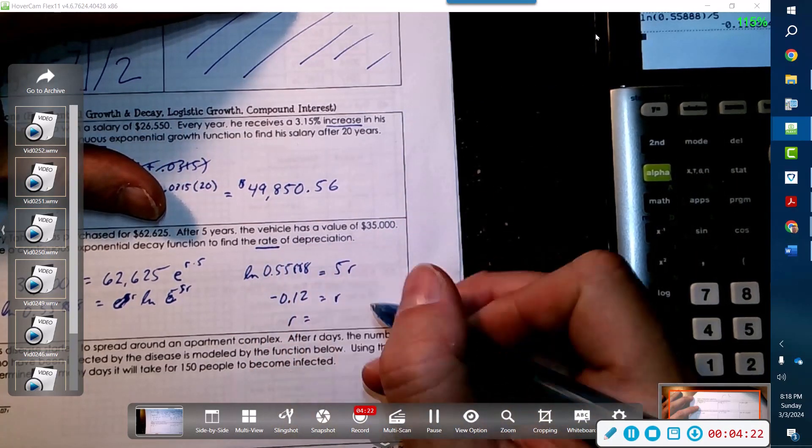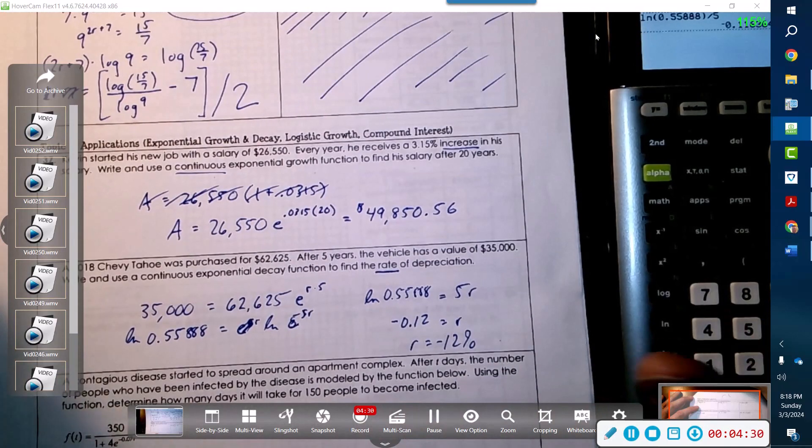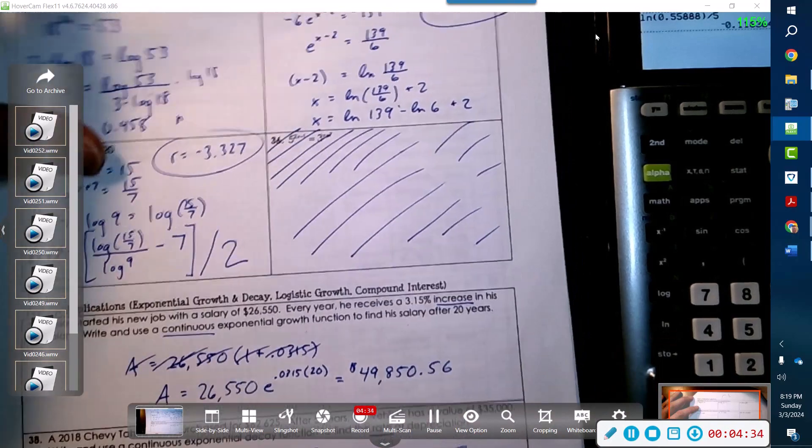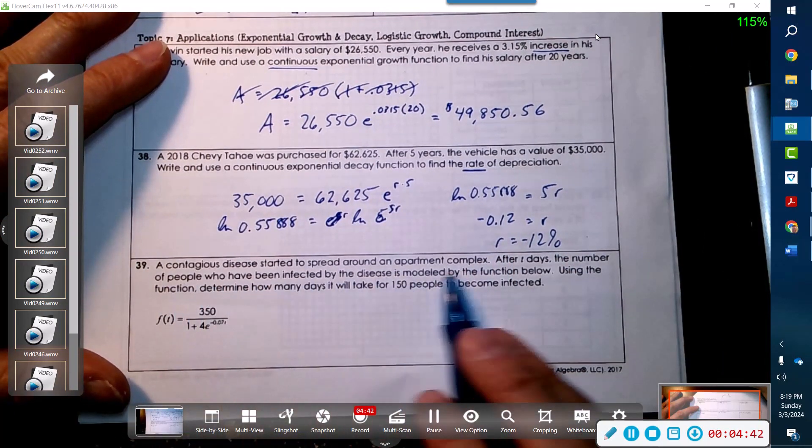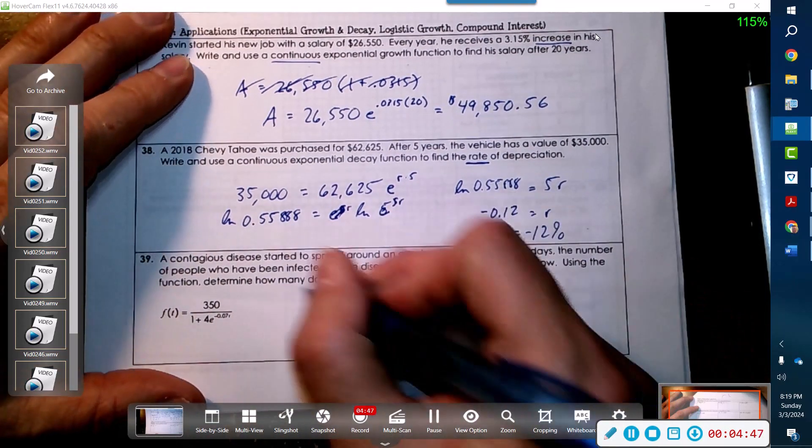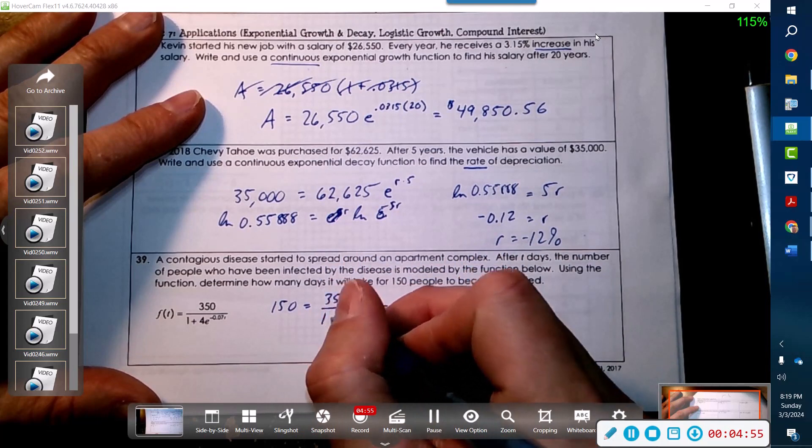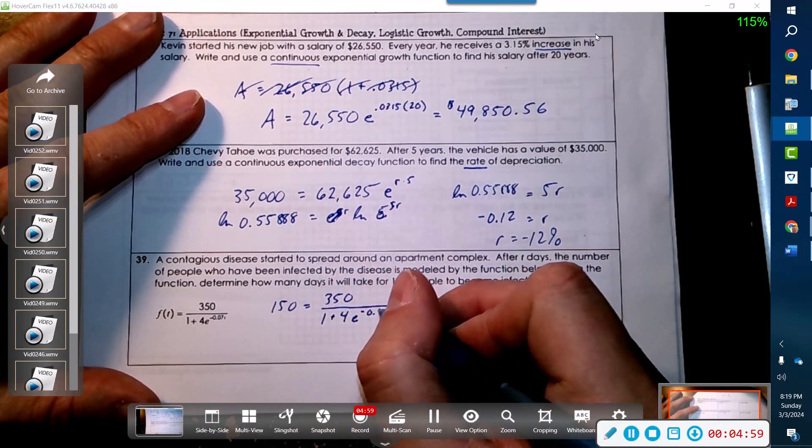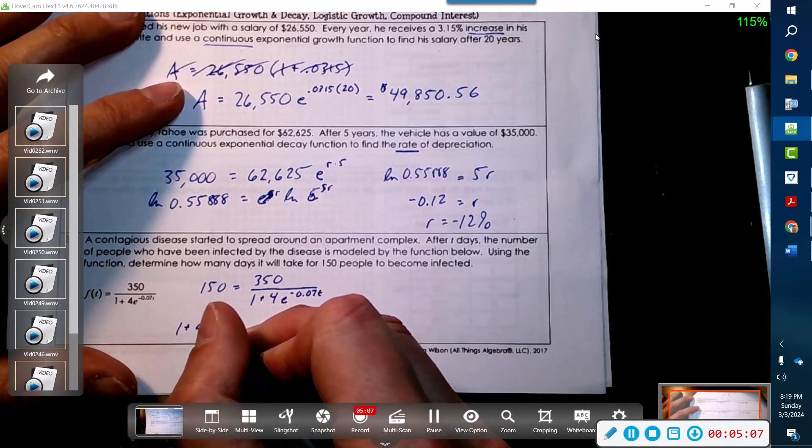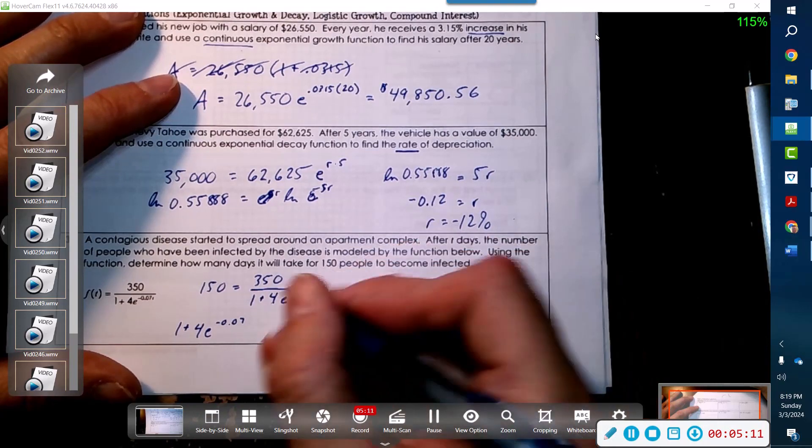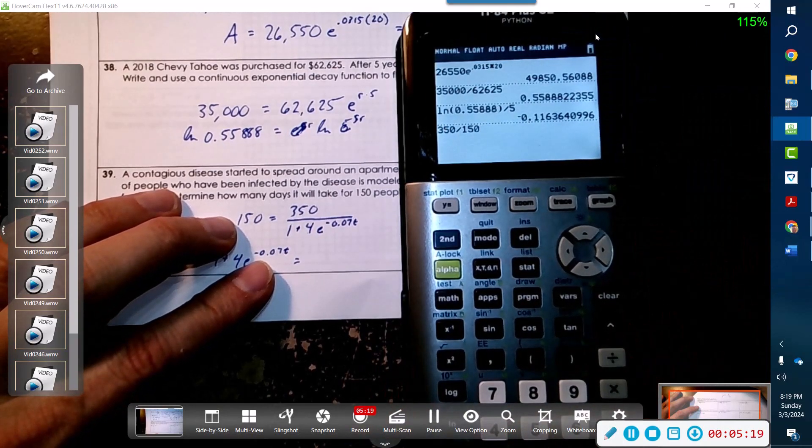So the rate is 12%. Does that seem reasonable? It loses 12% each year - yeah, it seems about right. For cars actually it's usually more than that. Alright, so a contagious disease problem - we need to find how many days it will take for 150 people. This feels impossible to solve because look at how complicated this is, but in one move this problem becomes pretty simple. We simply swap these two out so that 1 plus 4e to the negative 0.070t equals 350 divided by 150.